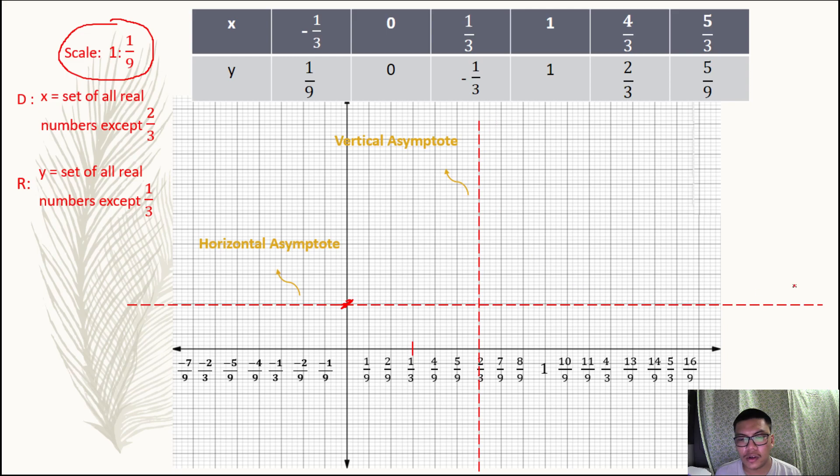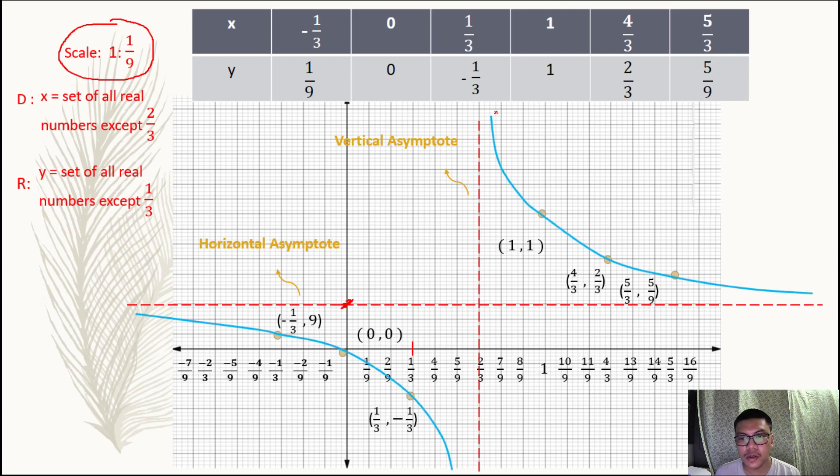But what's important is we can see the appearance of the graph. So plotting these other points, we have zero zero, we have one third and one, negative one third, we have one one, we have four thirds two thirds, five thirds and five over nine. So connecting these points, we have our graph.